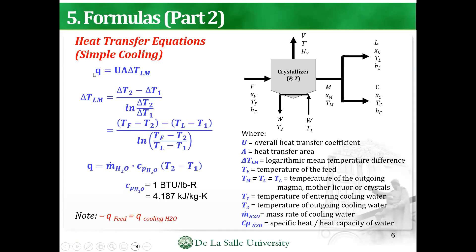It is also important to take note of some of the heat transfer equations. So Q is equal to UA·ΔTLM. The ΔTLM is the logarithmic mean temperature difference: ΔTLM equals (ΔT2 minus ΔT1) divided by ln(ΔT2/ΔT1). So T1 is the incoming temperature of the cooling water and T2 is the outgoing temperature. TF and TL would be the feed temperature and the mother liquor temperature, giving us TF, TL, T1, and T2.